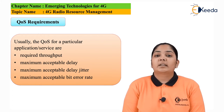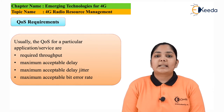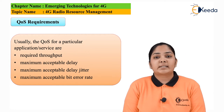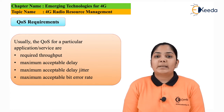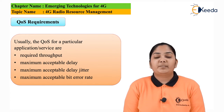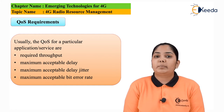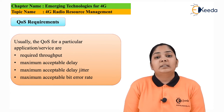Required throughput means the amount of data transmitted is received by the receiver equally. Maximum acceptable delay means the delay between the transmitted and received data should be minimum. Maximum acceptable delay jitter refers to the variation in delay — some delays may be larger and some smaller, which should ideally not occur. The delay should be equal and jitter minimized.